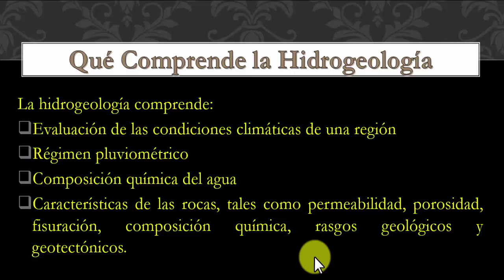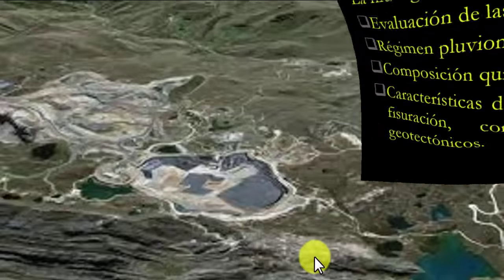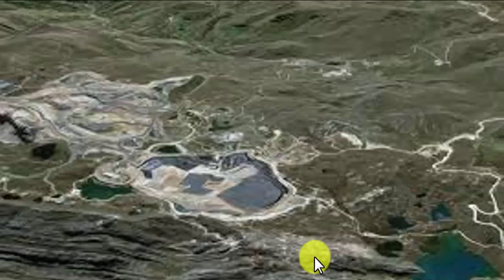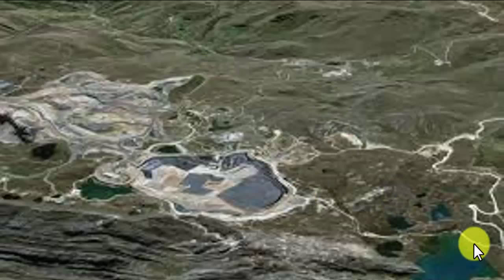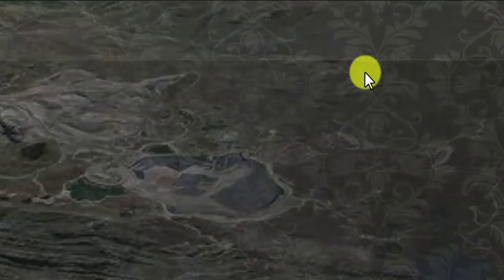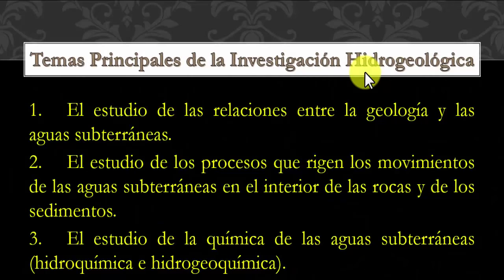En este terreno, vemos una formación con caliza donde hay encharcamiento, posiblemente por un suelo semi-impermeable que retiene el agua después de una lluvia. Esto ilustra que no tenemos formaciones homogéneas a través de los acuíferos; las formaciones van a depender del tipo de roca y del tipo de suelo y las características de estos elementos. ¿Cuáles son los temas principales de la investigación hidrogeológica?